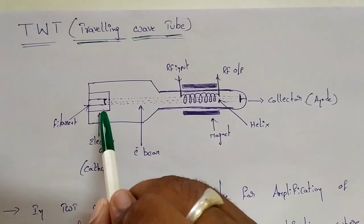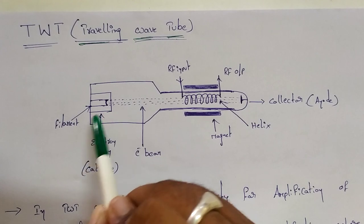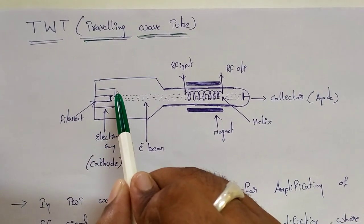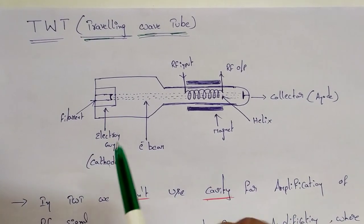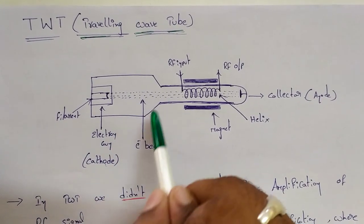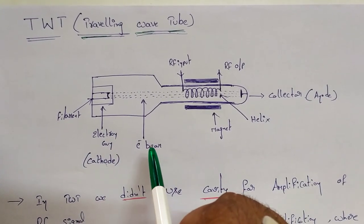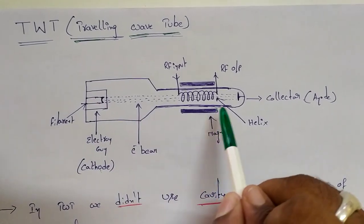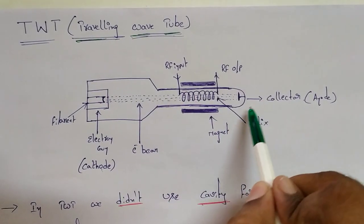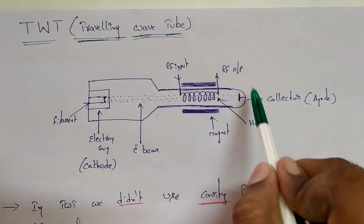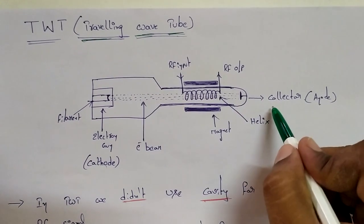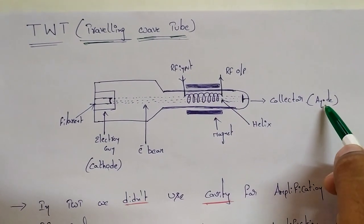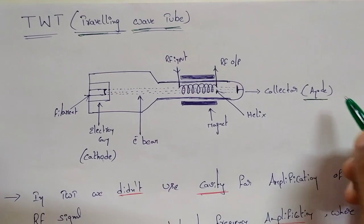Electrons can travel in a tube. In the tube, electrons are produced by a filament — it is not a filament-less electron gun. The beam is called E-beam, also called Electron Beam. You can send a signal through a helix tube inside a cylindrical tube, and you can place a collector.